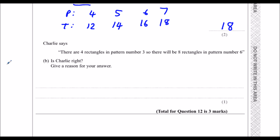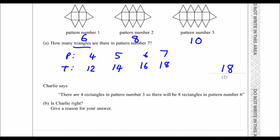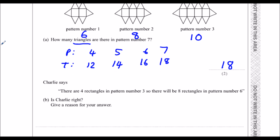Now, Charlie says: let's look at the rectangles. There are 4 rectangles in pattern 3, so there will be 8 rectangles in pattern 6. What he's done is doubled it, but that's not the relationship that's going on here.